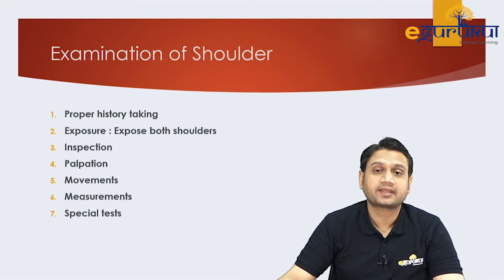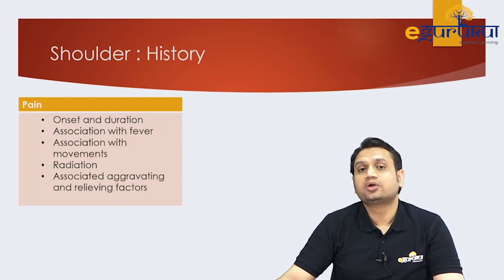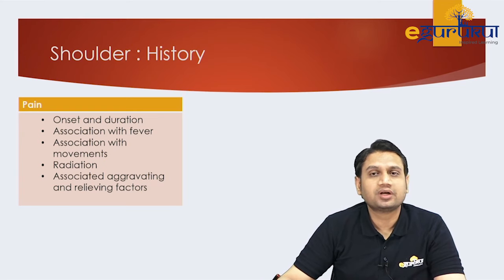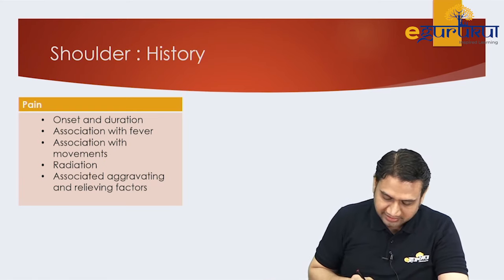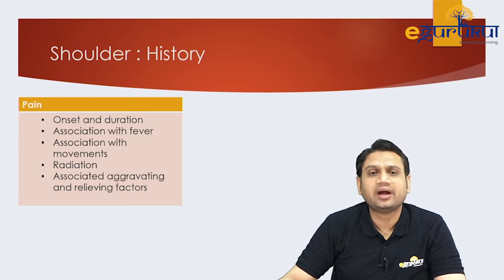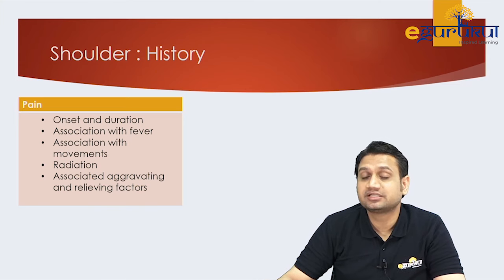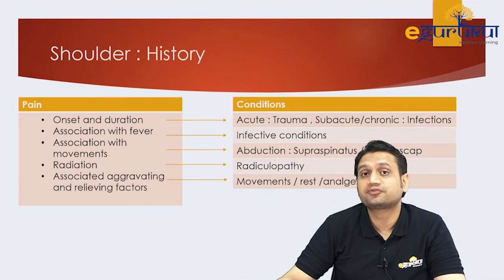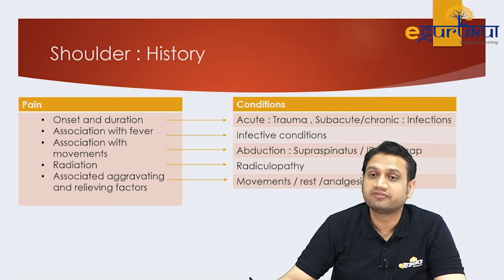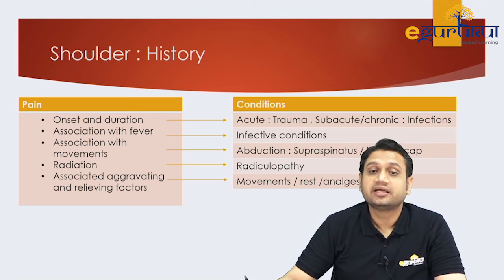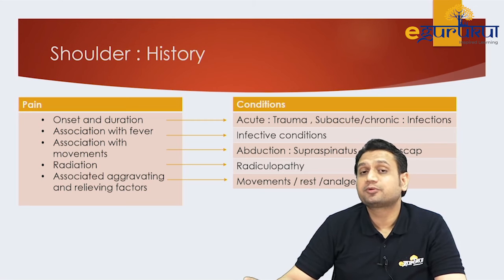In the history, the patient may come with pain. Ask about onset, duration, association with fever, association with movement, whether the pain is radiating, and any aggravating or relieving factors. Each point has a different meaning: acute onset suggests trauma; chronic or subacute onset suggests infection. Association with fever indicates an infective condition.